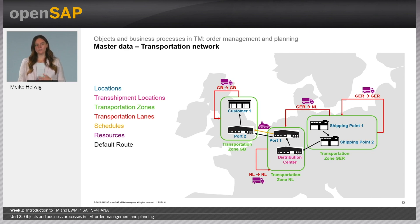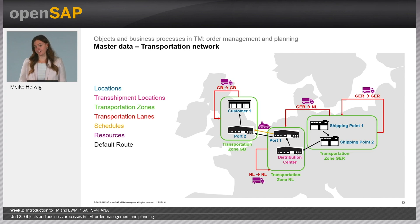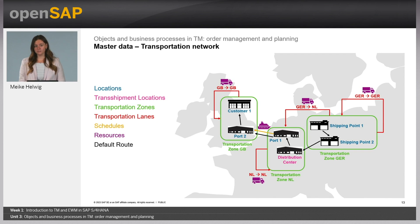We also have a route, which is a more static way of defining a path through the network. It's like a route which always gives a predefined way through the network that can be reused every time, because you want to fix the way that should be done every time — maybe because you have special rates on this. And this is more or less the network. As I said, you can define it in a way which you need for your business process. Sometimes you need it more complex, sometimes not — it's up to you in your implementation project.